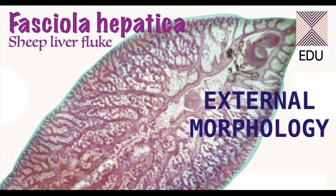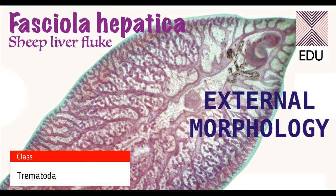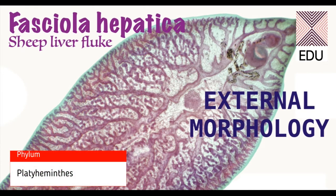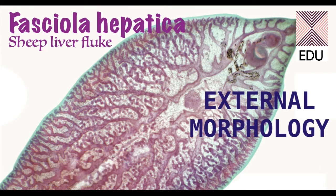Fasciola Hepatica belongs to the class Trematoda. Trematodes are basically all parasites and they are commonly called flatworms. The phylum of this liver fluke is Platyhelminthes, which means flatworms or flukes.